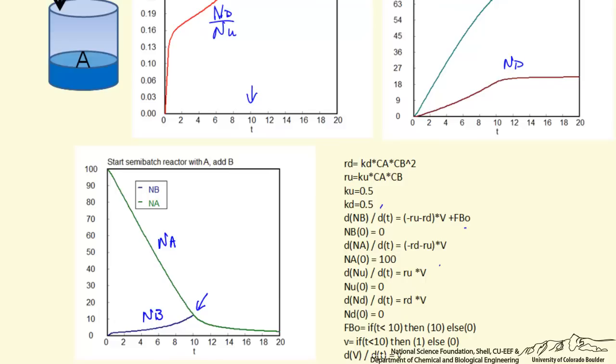So its concentration doesn't get very high, and at this point we stop adding B and the reaction continues. The stoichiometry is 1 to 1, so now the number of moles of B and the number of moles of A are decreasing at the same rate.